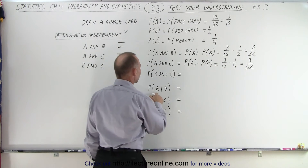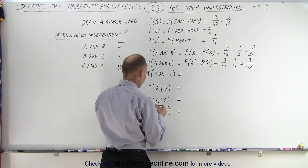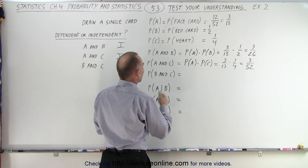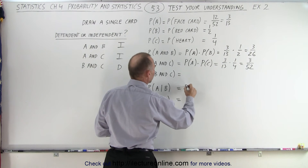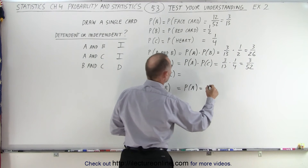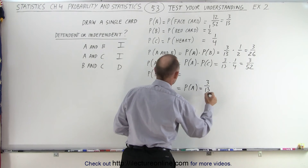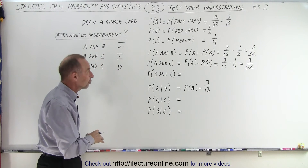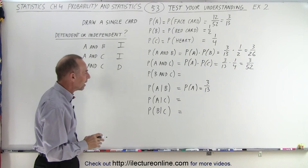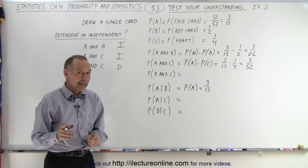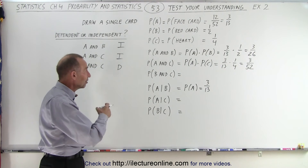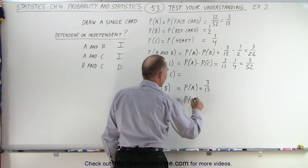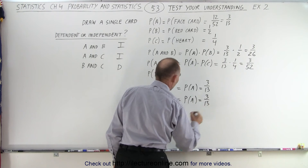How about the probability of A occurring given that B has occurred? Since A and B appear to be independent events, it doesn't matter — that should just equal the probability of A, which is 3 out of 13. It doesn't matter if we know we pulled a red card; the ratio of getting a face card is still the same. How about A given C? Again, since we pulled a heart, it doesn't matter — the face card probability is still 3 out of 13. No effect there.